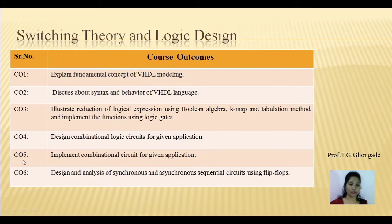Course outcome number 5, that is CO5, is to implement combinational circuits for a given application. After learning about the concept of combinational circuits, you will be able to implement those combinational circuits for a given application.